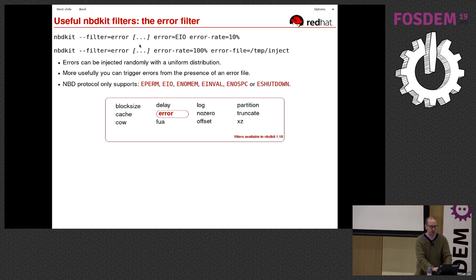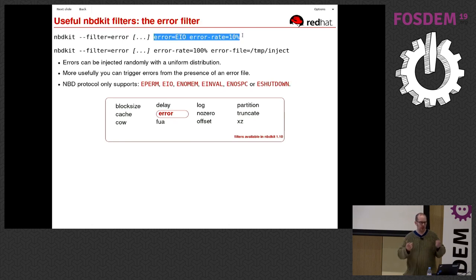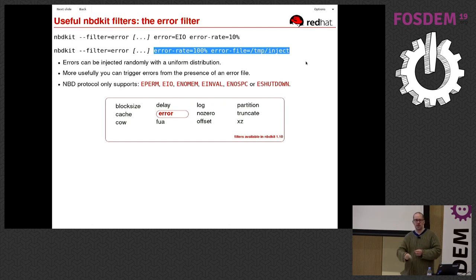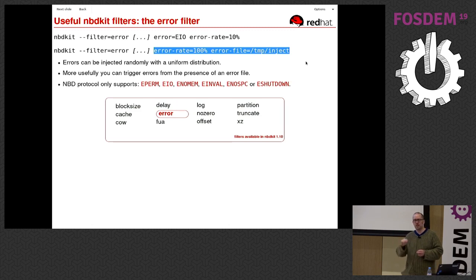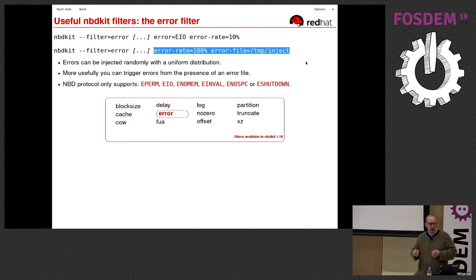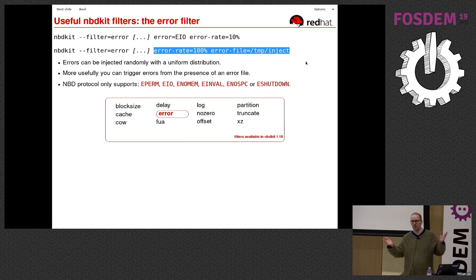The more useful way to use the error filter is to set the error rate to 100% — all requests fail — but gate it on an error file. If the error file doesn't exist, no errors are injected. When you create that file, the error filter is turned on. nbdkit checks that error file continuously while running. This is super useful for testing because you can inject errors when you want them, then turn off error injection and see if your file system recovers.